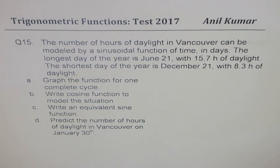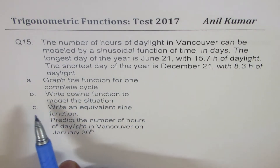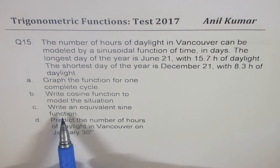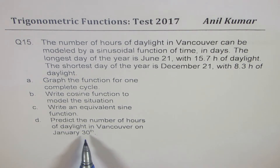I'm Anil Kumar sharing with you a very important test question on periodic trigonometric functions. We are doing modeling of functions. The question is: the number of hours of daylight in Vancouver can be modeled by a sinusoidal function of time in days. The longest day of the year is June 21 with 15.7 hours of daylight. The shortest day is December 21 with 8.3 hours of daylight. Part A: graph the function for one complete cycle. Part B: write a cosine function to model the situation. Part C: write an equivalent sine function. Part D: predict the number of hours of daylight in Vancouver on January 30th.